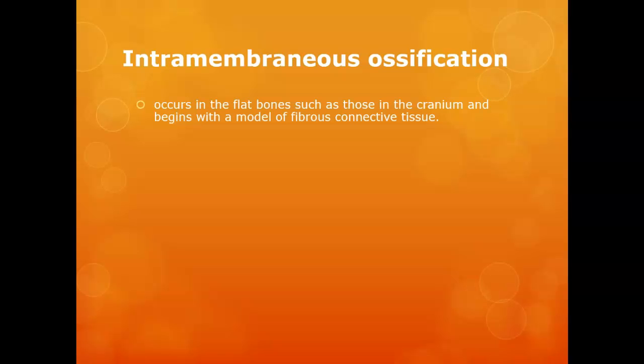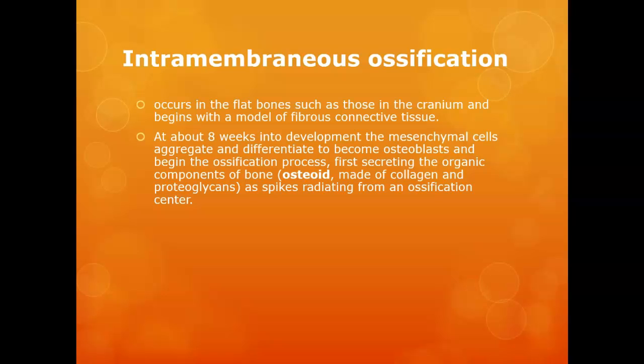Intramembranous ossification means bones are formed between membranes. Flat bones of the cranium are formed this way. Think of it like a pillowcase — the pillowcase represents the membranes. As the embryo becomes a fetus around eight weeks in, mesenchymal cells aggregate and differentiate into bone-forming cells inside that pillowcase, and they start secreting the organic parts of the bone — the fibers — and then lay down the inorganic matrix.